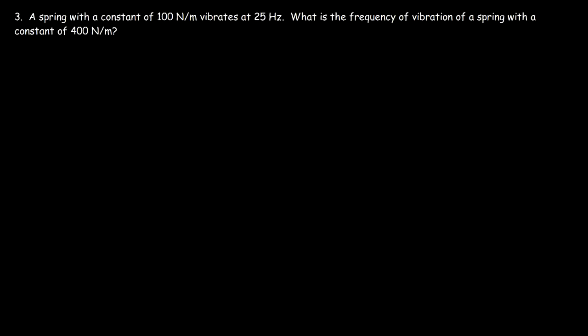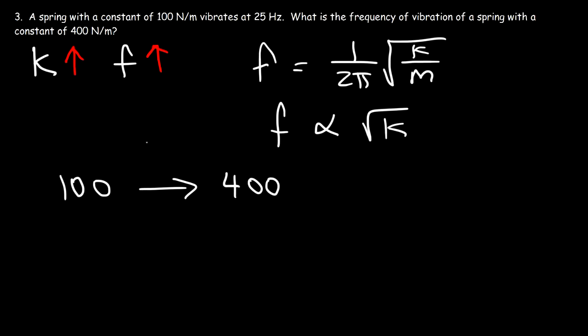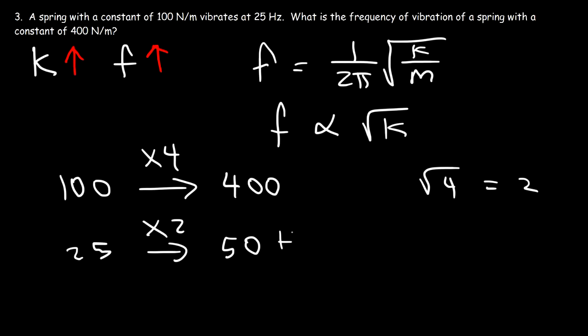Number three: a spring with a constant of 100 newtons per meter vibrates at 25 hertz. What is the frequency of vibration of a spring with a constant of 400 newtons per meter? As the spring constant increases, the frequency increases. We know that frequency is 1 over 2 pi times the square root of k over m, so frequency is proportional to the square root of k. The spring constant increases from 100 to 400 — a factor of 4 — and the square root of 4 is 2. So the frequency increases by a factor of 2, giving an answer of 50 hertz.